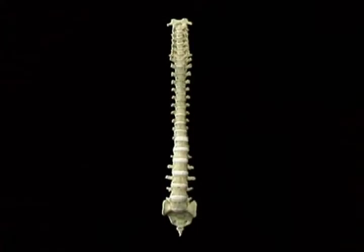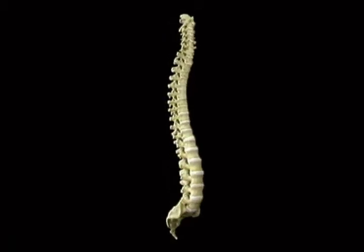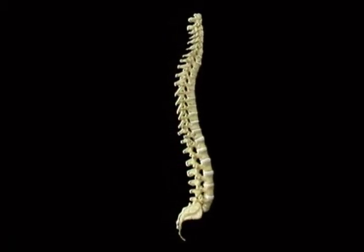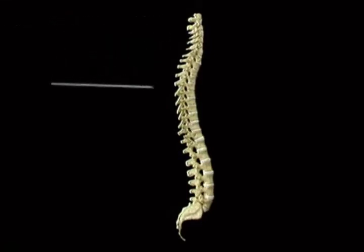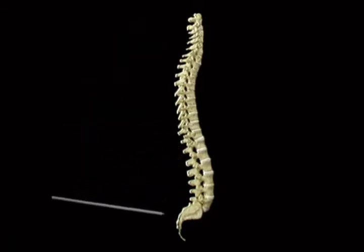When seen from in front, the spine appears straight. But when we look at it from the side, we see that it's markedly curved. The lower cervical vertebrae form a forward curve, the thoracic vertebrae form a backward curve, the lumbar vertebrae curve forward again, and the sacrum curves sharply backward.